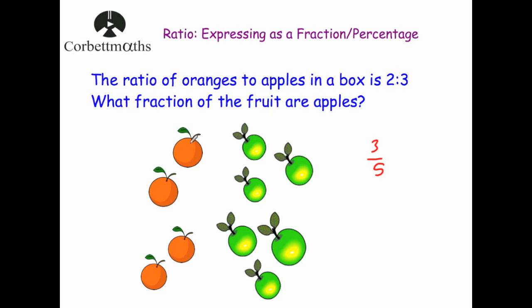There are 10 pieces altogether, so 10 goes on the denominator. There are six apples, so six goes on the numerator. Six tenths cancels down to three fifths. So it doesn't matter how many pieces of fruit were in the box — if we know the ratio we can write it as a fraction, because in its simplest form for every two oranges there's three apples, meaning three out of five are apples, giving three fifths.